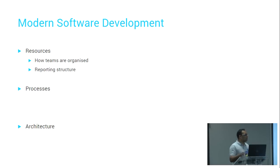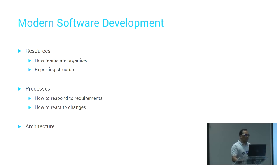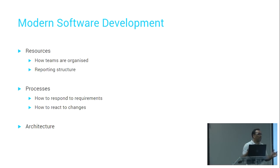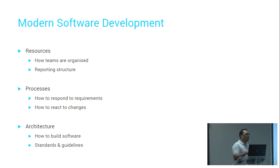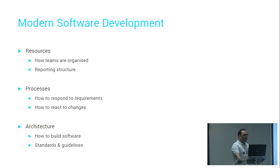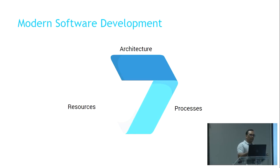Under resources, you have to consider your organizational structure and how you manage teams. Under processes, you define how you manage requirements from the business — things like the entire software development lifecycle: do you go agile, waterfall, or a combination? Your architecture defines your standards, guidelines, how you manage code changes, code quality, and ultimately how you build your software.